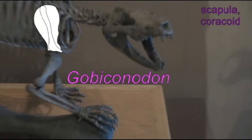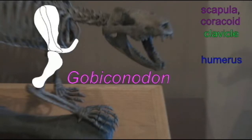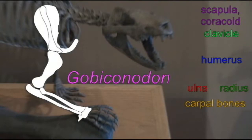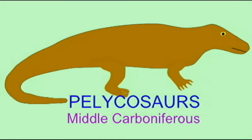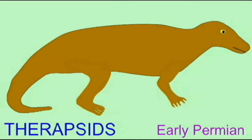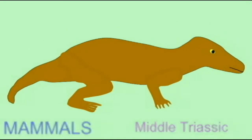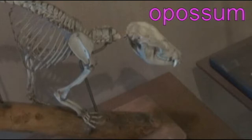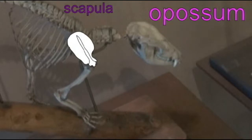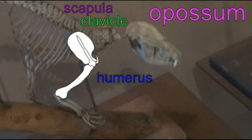In the Cretaceous, the fossil mammal Gobi ponidon and the early Therian mammals had a much more modern scapula, which possessed a spine and a supraspinous fossa.